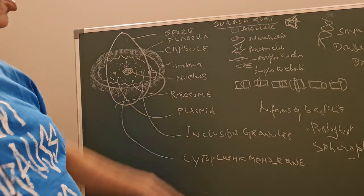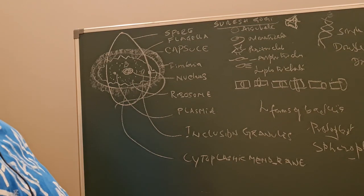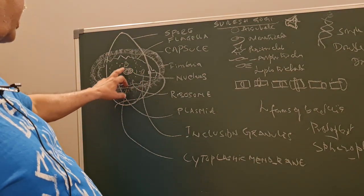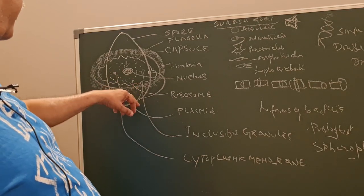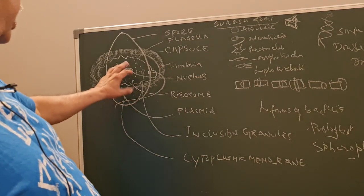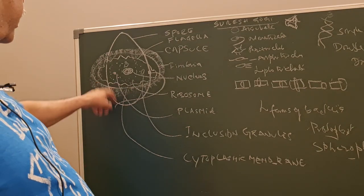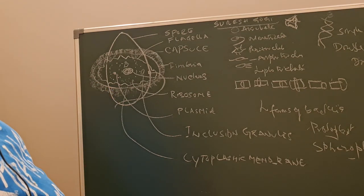The bacterial nucleus consists of a single molecule of double-stranded DNA. There are inclusion granules which are very helpful in identification of bacteria like Corynebacterium. They are situated at the poles and are polymerized metaphosphate.